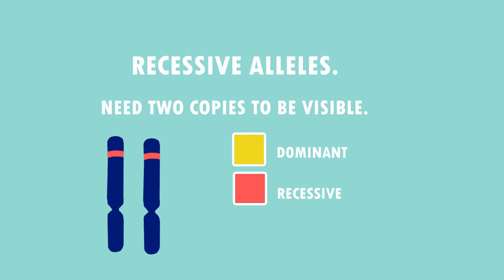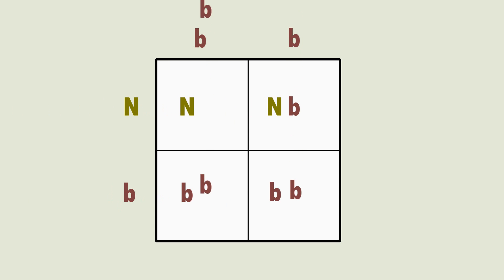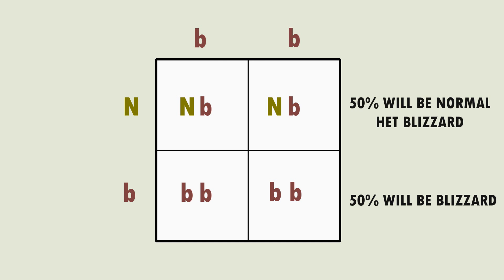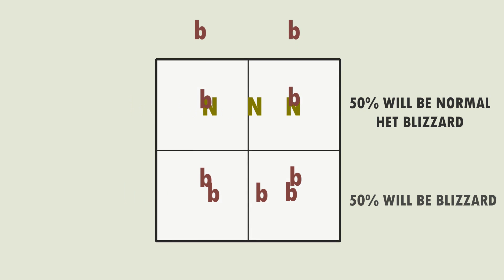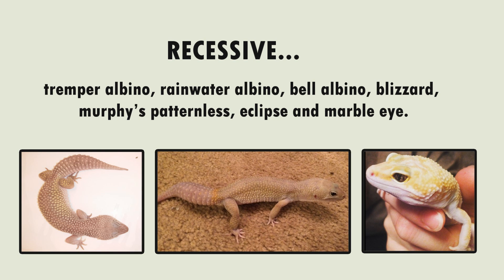Let's quickly touch upon recessive alleles. In order for these to be shown there must be two of the same alleles present. If we take an offspring from our last example — heterozygous, carrying one dominant and one recessive allele — and breed it with a blizzard who is homozygous recessive, we get: NB, NB, BB and BB. This shows that 50% of the offspring will visually look like blizzards and the other 50% will look normal but carry the blizzard allele, so they'll be known as normal het blizzard. Remember these percentages are only probabilities. There aren't many recessive alleles — only Tremper Albino, Rainwater Albino, Bell Albino, Blizzard, Murphy's Patternless, Eclipse and Marble Eye.